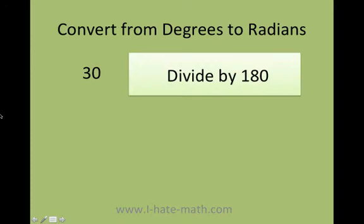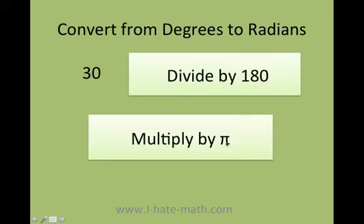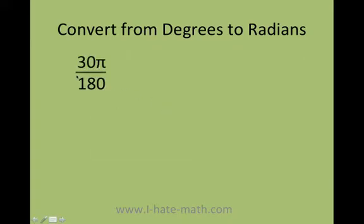Well, these are the steps. First divide your number by 180 and then just multiply it by pi. So let's do it. As you can see here, I just divide 30 by 180 and then I just multiply it by pi. Now you just need to simplify.